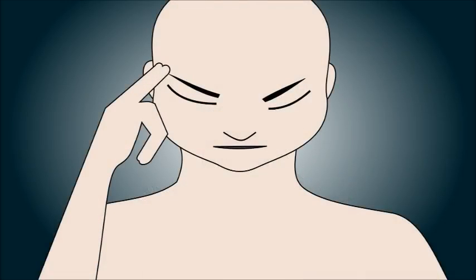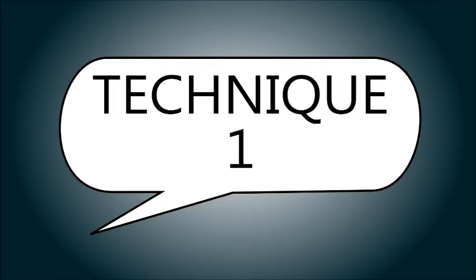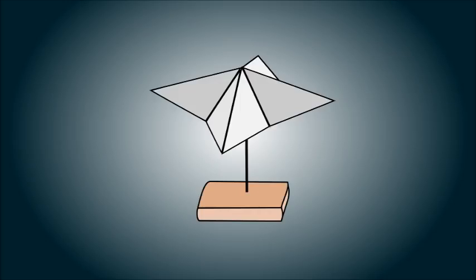When you have done the meditation, you can continue with one of the following techniques. Technique 1: For this technique you will use a psi wheel, so take a piece of paper and cut out a small square.